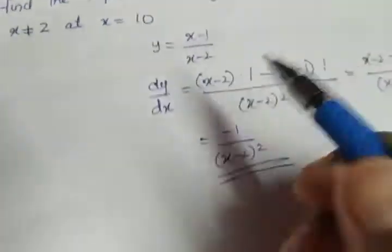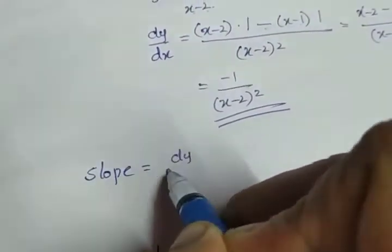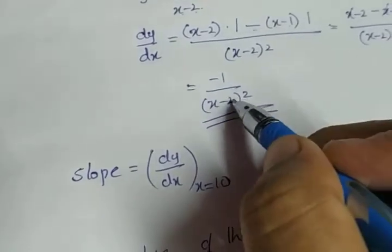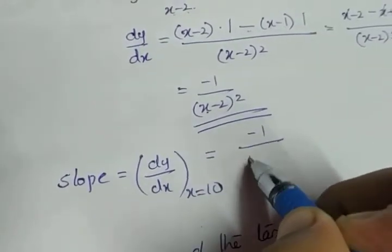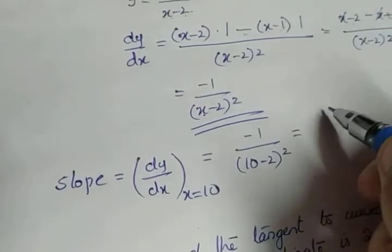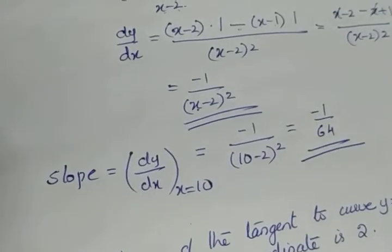And we have to find the slope at x equal to 10. So what we will do, slope will be equal to dy/dx at x equal to 10. So in the value of the slope, wherever x is there, replace it by 10. Minus 1 by (10-2) the whole square. What is 10 minus 2? 8 and 8 square is 64. So you are getting the slope as minus 1 by 64.